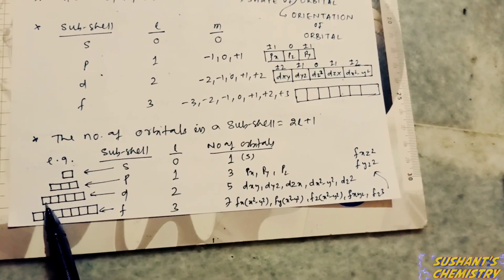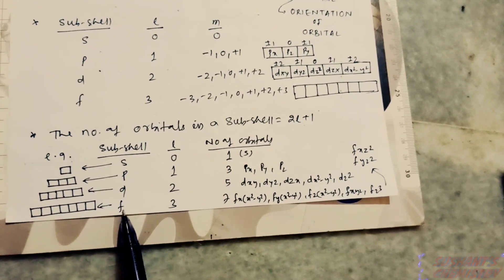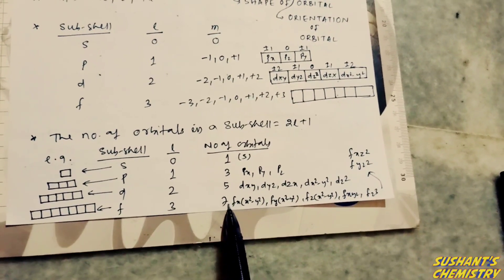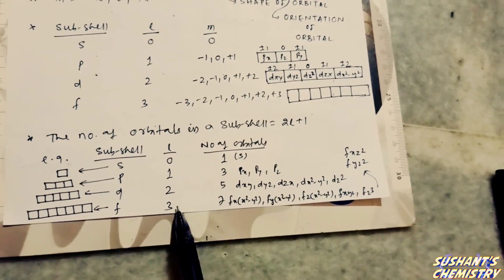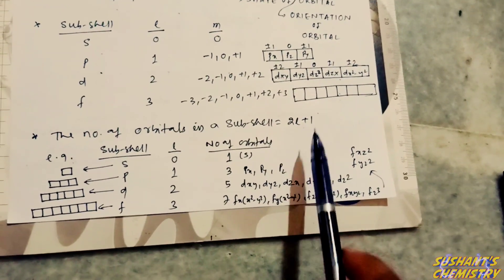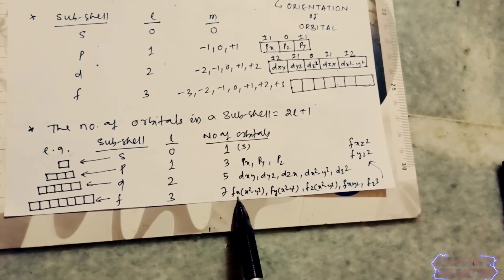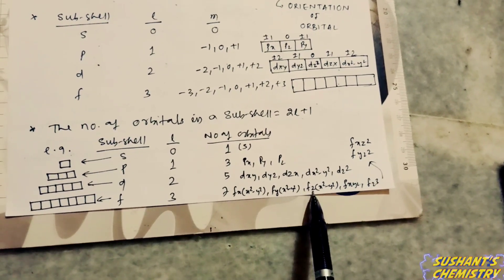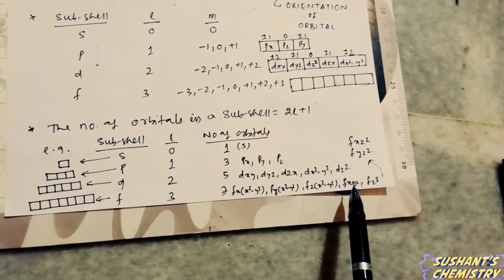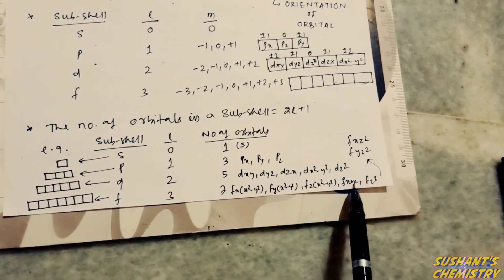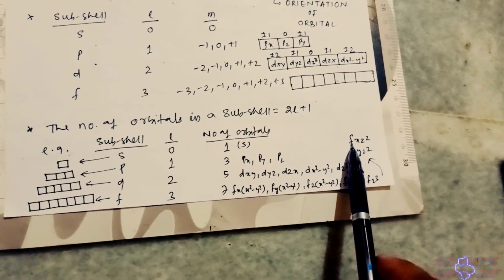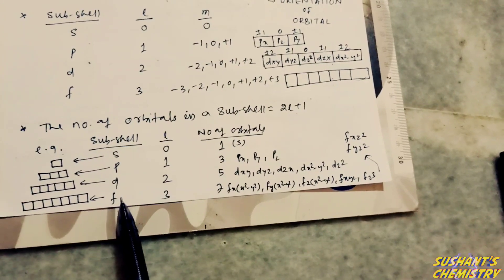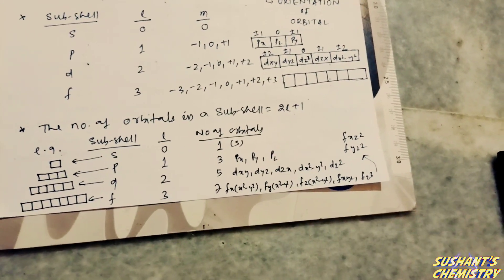The entire d subshell is divided into five orbitals. The f subshell contains seven orbitals by putting l equals three into the formula: 2×3 plus one equals seven. These are fx(x²−y²), fy(x²−y²), fz(x²−y²), fxyz, fz³, fxz², and fyz².